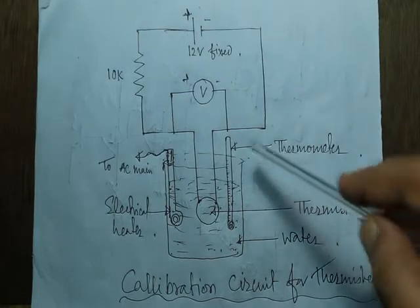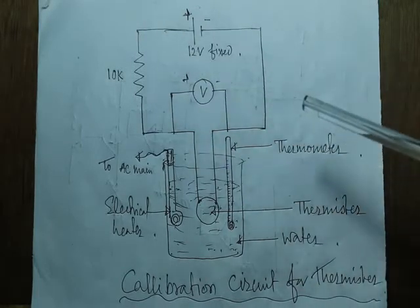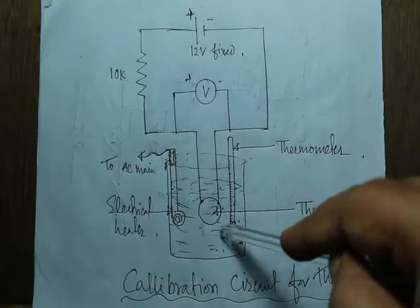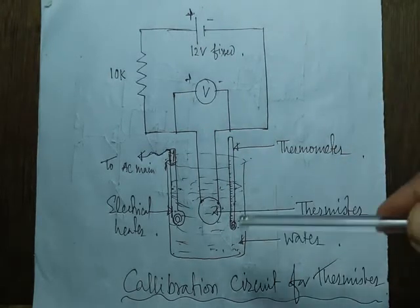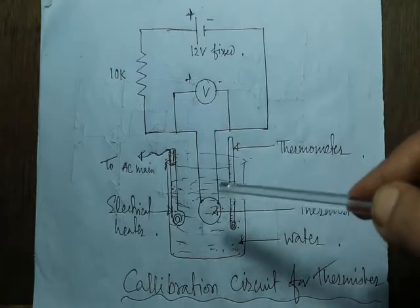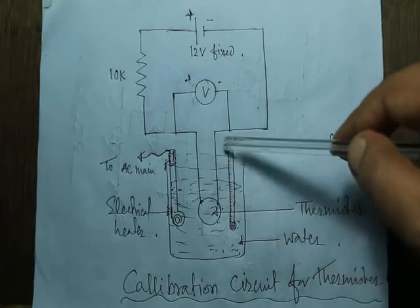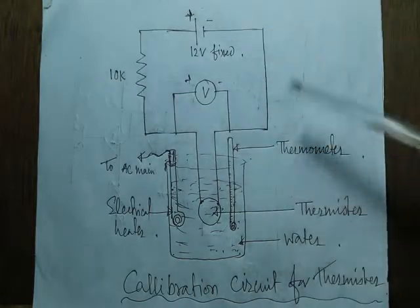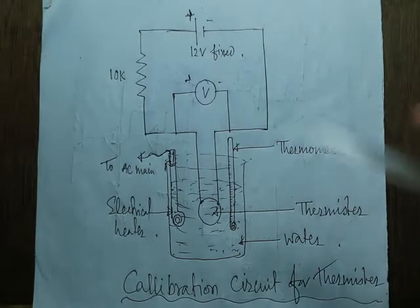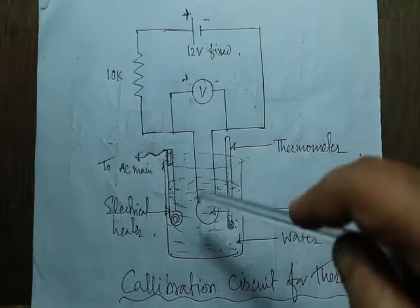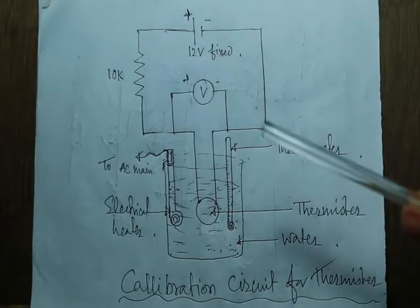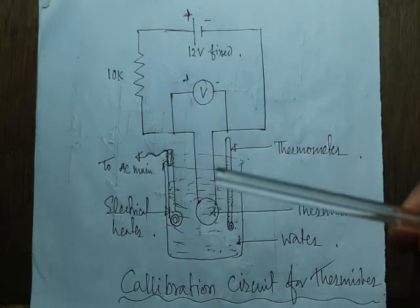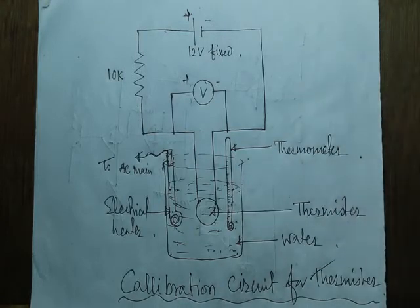We will plot a voltage versus temperature graph and from that we can calibrate the thermistor — whether it is PTC or NTC — so that we know what voltage it produces at a given temperature. This calibration curve will then be used to design a temperature controller circuit using other components.